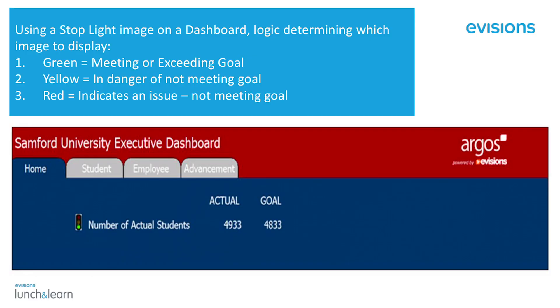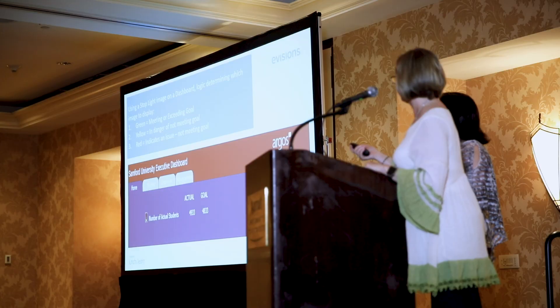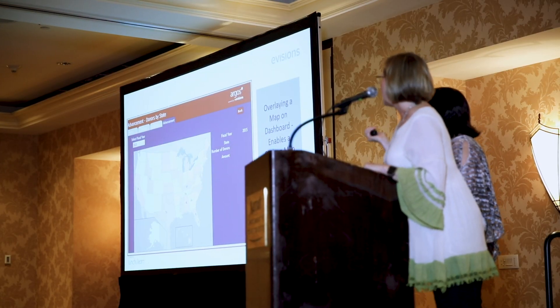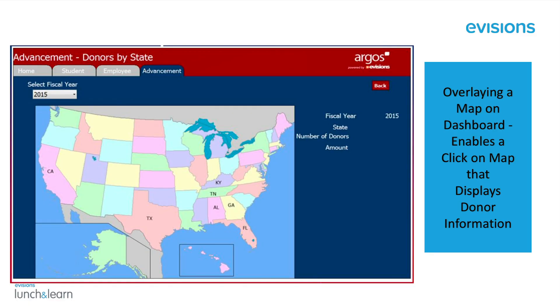There's also a visible and invisible function — we did traffic lights. Green means good, yellow means caution, red means we're in trouble. Depending on the data behind it, what shows up on screen gives a really quick executive view. Both elements are there; it just depends on the data which one shows up. The alumni department wanted to know how many donors they had by state, so we have an image of a map with on-click functionality behind each state. They click a state and it displays the information — a great visual and quick way to see the data they need.